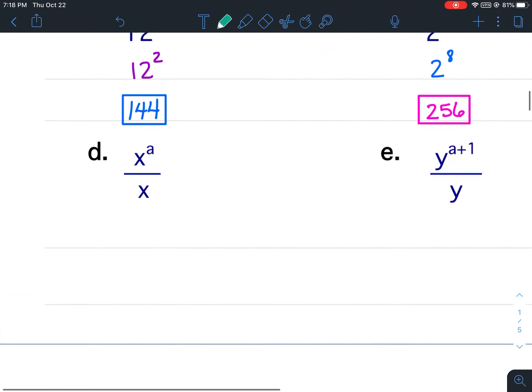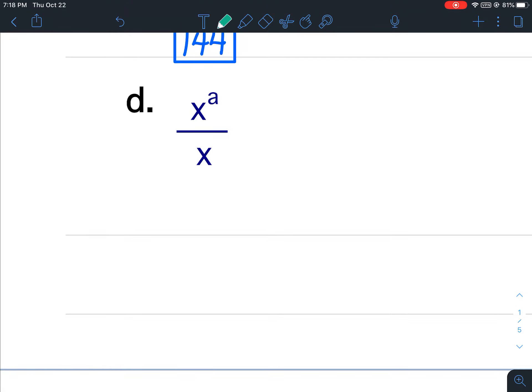For D when you don't see an exponent put a 1. So for D I have X to the A minus 1. Can you simplify that at all? Can you take A and subtract 1 and get something else? No. So therefore X to the A minus 1 is our final answer.